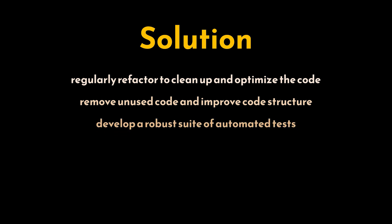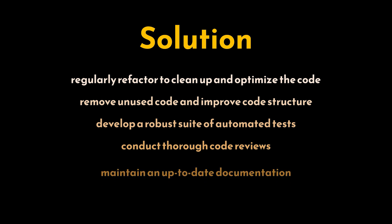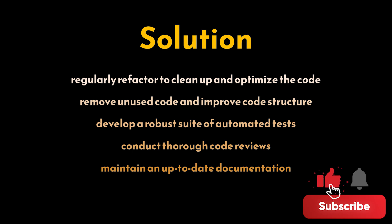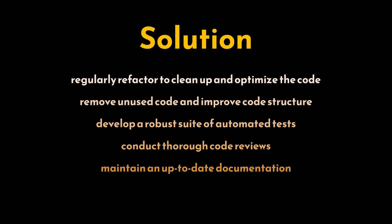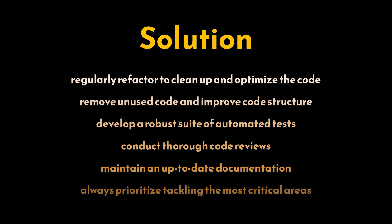Developers must also develop a robust suite of automated tests to ensure that changes do not break existing functionality. This gives developers the confidence to remove outdated code. We should conduct thorough code reviews to ensure new code adheres to best practices and does not introduce new complexities, all while maintaining up-to-date documentation that accurately describes the codebase and its dependencies. This helps developers understand the system and identify obsolete parts, allowing us to actively manage technical debt by allocating time in each development cycle to address and reduce it, always prioritizing the most critical areas that impact performance and maintainability.